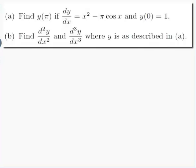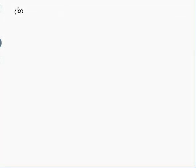Part b: To find d²y/dx² and d³y/dx³. Well d²y/dx² is the second derivative, which means to get it we differentiate the derivative. We know what dy/dx is. Let me write that out again: x squared minus π cos x. So that's the first derivative. To get the second derivative we differentiate it again.